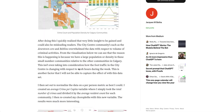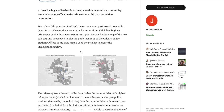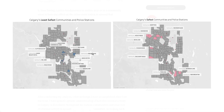Another interesting result ties back to question five: does having a police headquarters or station near a community seem to have any effect on the crime rates within or around that community? After identifying the most dangerous and safest communities in Calgary based on average crime per capita, I created a subset with the 10 safest and 10 most dangerous. I included the police stations on the same base maps as these two subsets. I was fully expecting to observe that the safer communities were the ones in closer proximity to the police stations, but I found the opposite to be true — the most dangerous communities tended to be clustered around the police stations.